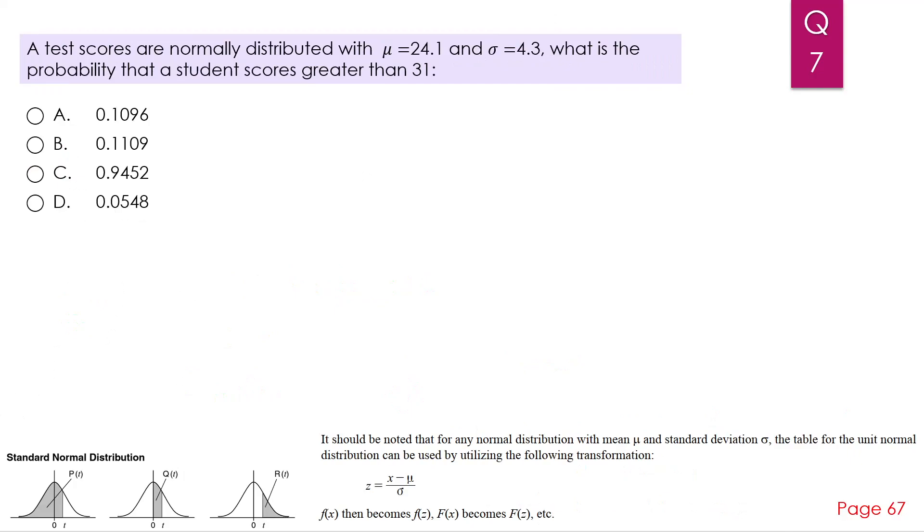Next one. Test scores are normally distributed with μ = 24.1 and σ = 4.3. What is the probability that a student scores greater than 31?